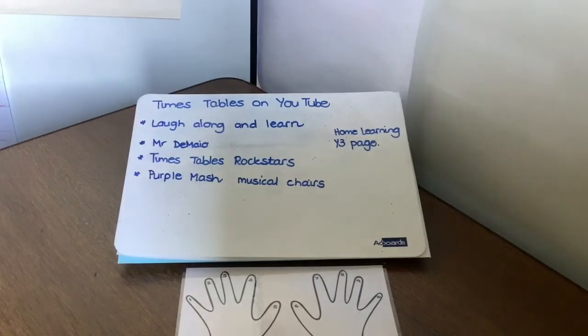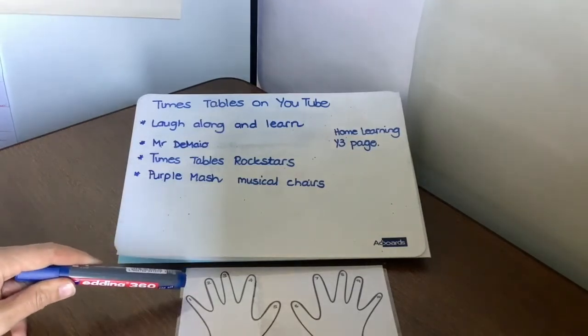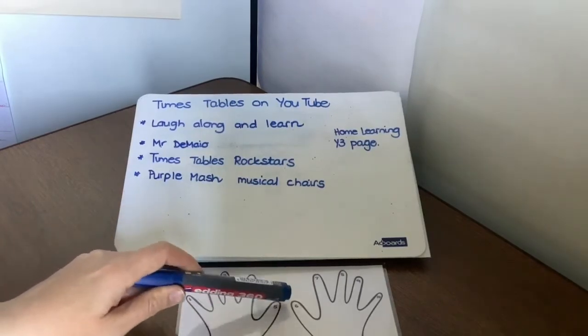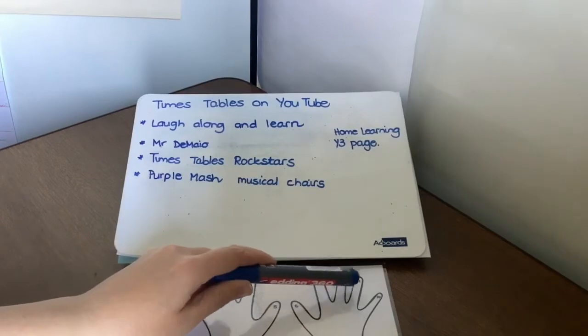Let's try a couple of times tables. Let's see how we're getting on. Let's try the 3's. So do it with me. 3, 6, 9, 12, 15, 18, 21, 24, 27, 30.